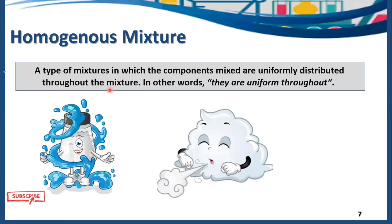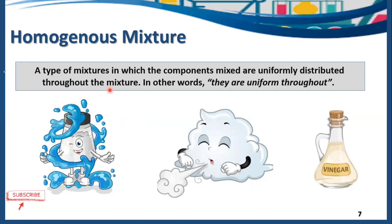Air is made up of different types of gases — for example, oxygen, carbon dioxide, nitrogen, and more. The components of air are all uniformly distributed throughout, which is why we are unable to see the particles or components of air with our naked eye. Vinegar is made of acetic acid and water, and since the components are uniformly distributed, it is also a homogeneous mixture.